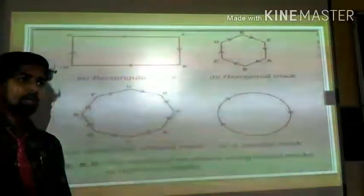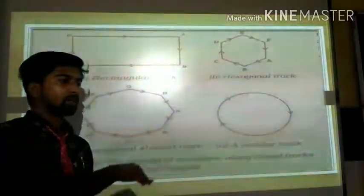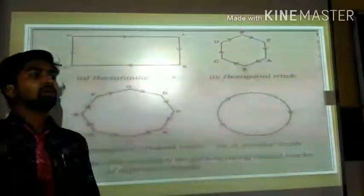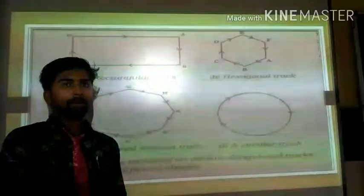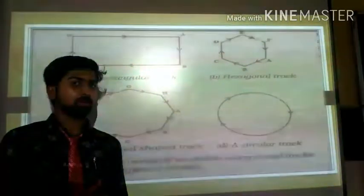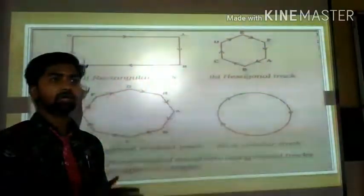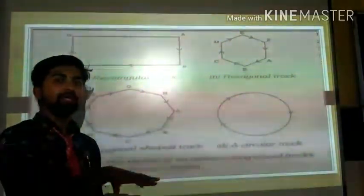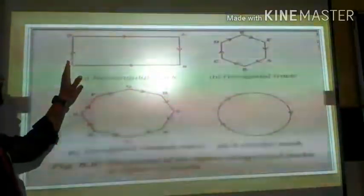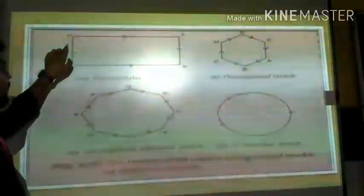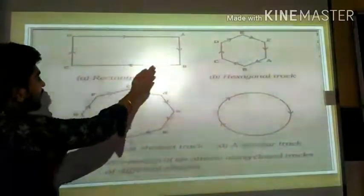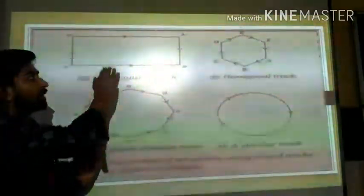Students, when an object moves on a circular path with uniform speed, its magnitude of speed is the same throughout. However, the direction of motion changes continuously. If the object were moving on a rectangular track, its direction would change at the corners — going up, down, left, and right.